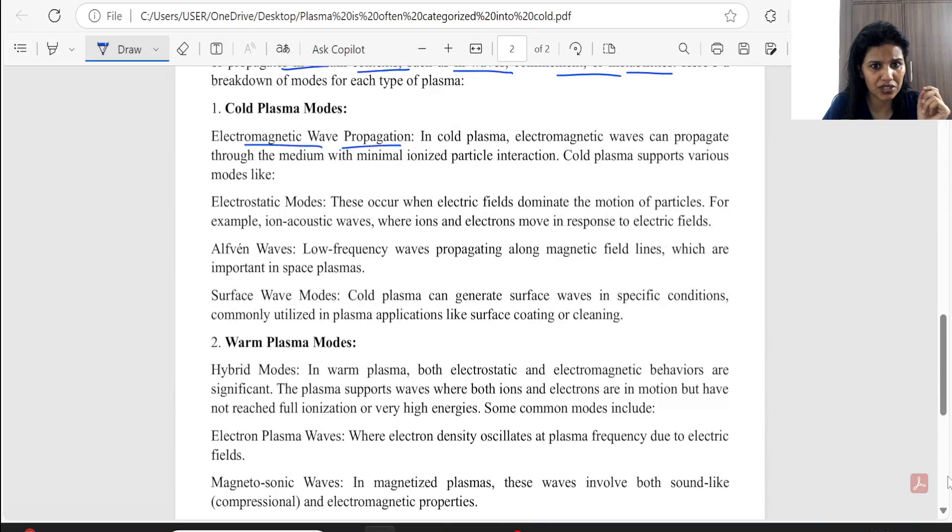Electromagnetic wave propagation. In cold plasma, electromagnetic wave can propagate through the medium with minimal ionized particle interaction. In cold plasma, we have seen that the electromagnetic wave will propagate, but the ionization will be minimum. Cold plasma supports various modes like electrostatic mode, alpha waves, surface wave mode.